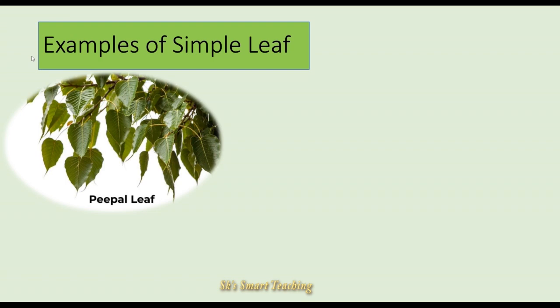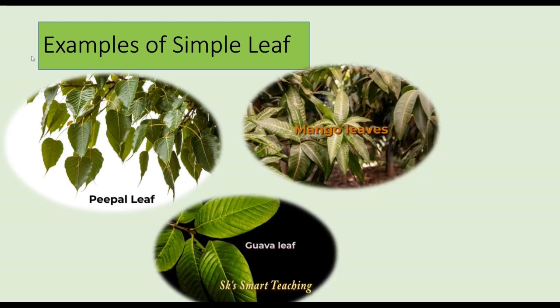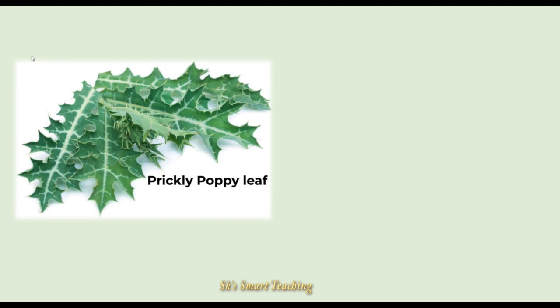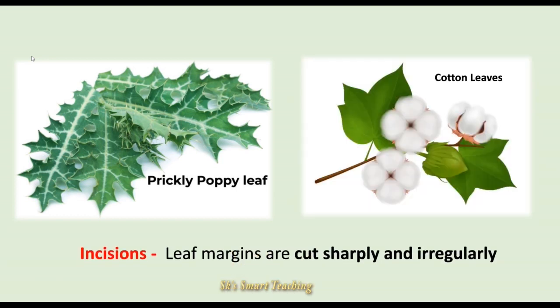Examples of simple leaves are peepal, goa, mango, and hibiscus. In some plants such as prickly poppy and cotton, the leaf blade has many incisions.